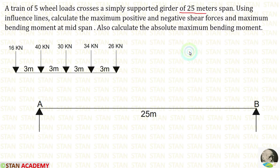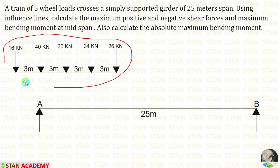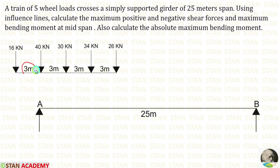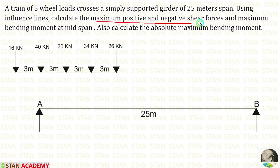In the question, the span of the beam is given as 25 meter, and 5 wheel loads are given. These 5 loads are spaced at 3 meter with each other. We have been asked to find out the maximum positive and negative shear forces and maximum bending moment at mid span, and also to calculate the absolute maximum bending moment.